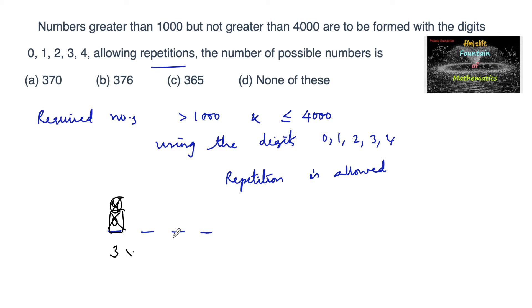And then the remaining 3 digits can be any of the 5 digits. So we can say this is 5 to the power of 3, or 5×5×5, which equals 125. And 3×125 is 375.